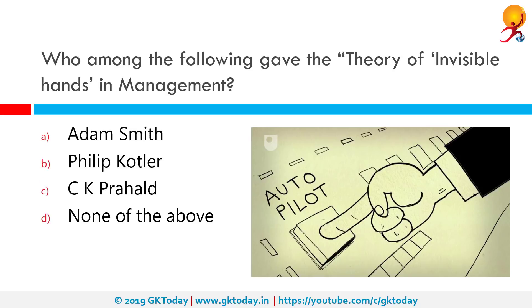Who among the following gave the theory of the invisible hand in economics? The correct answer is Adam Smith. The unobservable market force that helps the demand and supply of goods in a free market reach equitable equilibrium automatically is called the invisible hand. The phrase was introduced by Adam Smith in his book The Wealth of Nations.